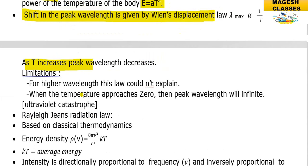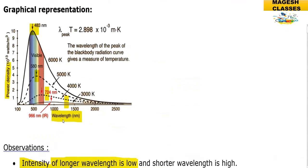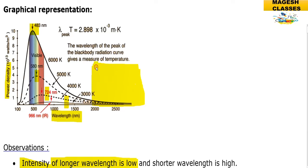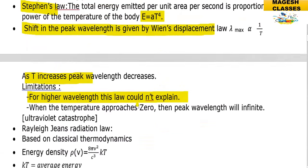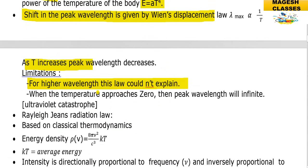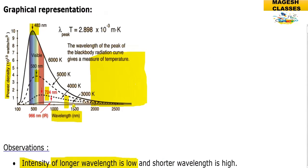The limitation of Wien's displacement law is that for the higher wavelength side this law cannot explain the distribution. As the temperature approaches zero, the peak wavelength would be infinite — Wien's displacement law cannot account for this region.